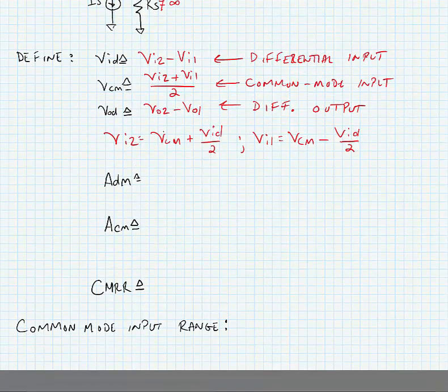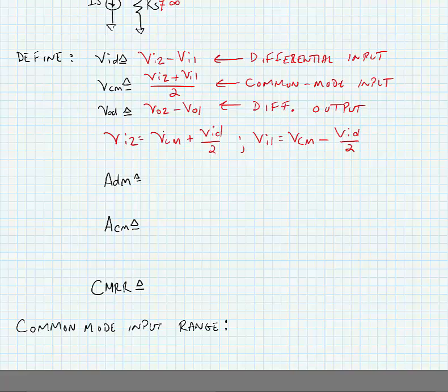We're going to define a differential gain ADM. This is equal to VO2 minus VO1 divided by VID. In other words, we're saying it's VOD divided by VID. Of course, we want this to be large. We want the circuit to have large gain.